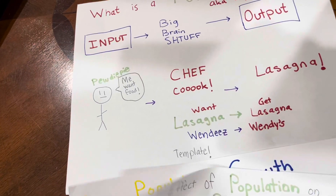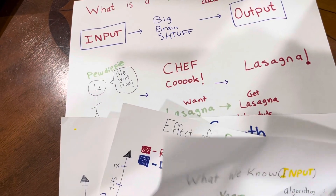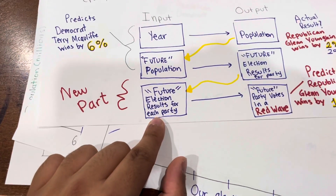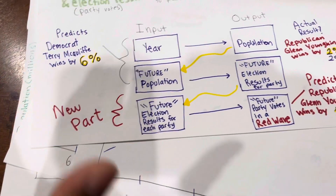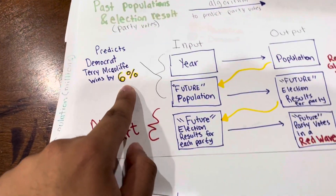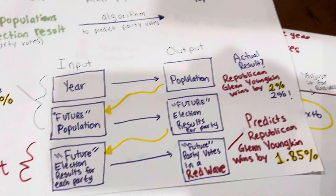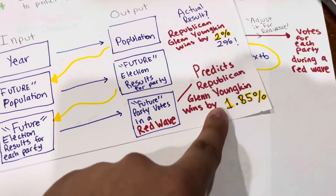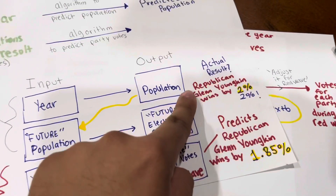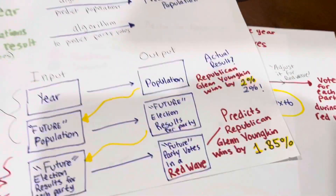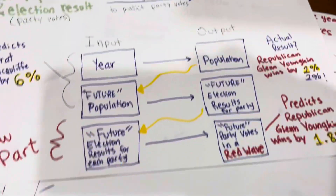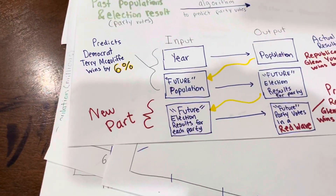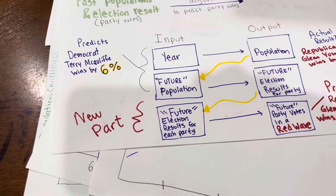After doing all of this, I added a new part where I corrected the 6% to account for a red wave, and I predicted Glenn Youngkin, the Republican, winning by 1.85%. In the general election, the actual result was he won by about 2%. I think I'm fairly accurate and did a good job, but I will say I think it's beginner's luck.